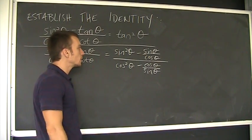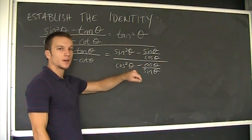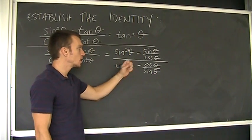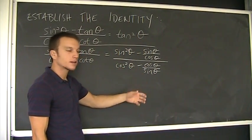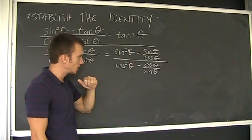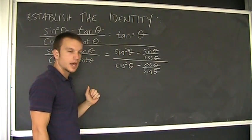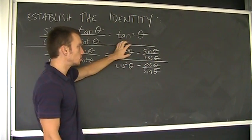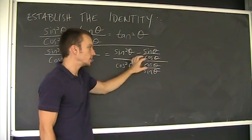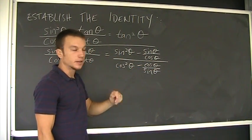The next thing we need to do, I've got a complex fraction. We've got a fraction within a fraction. Typically, there's a couple ways to handle that. You can multiply everything by the least common denominator, and that will get rid of those. Or you can add these two parts of the numerator together, and these two parts of the denominator together.